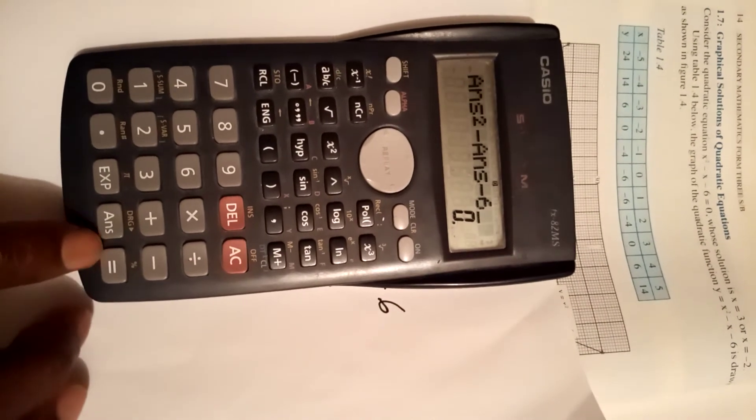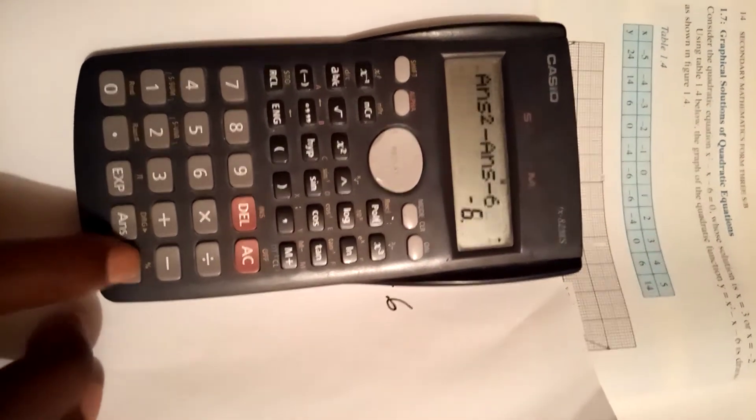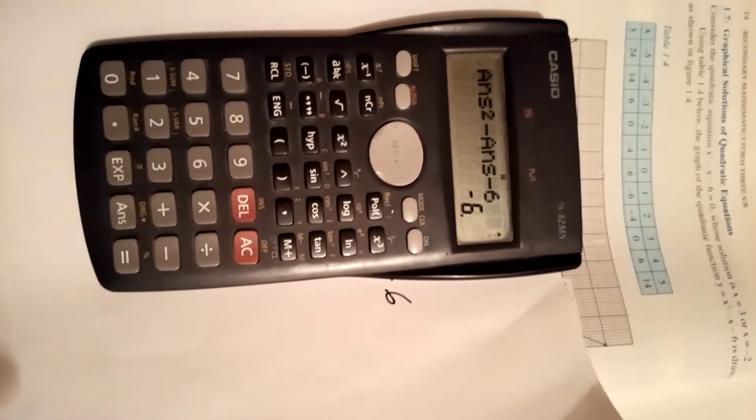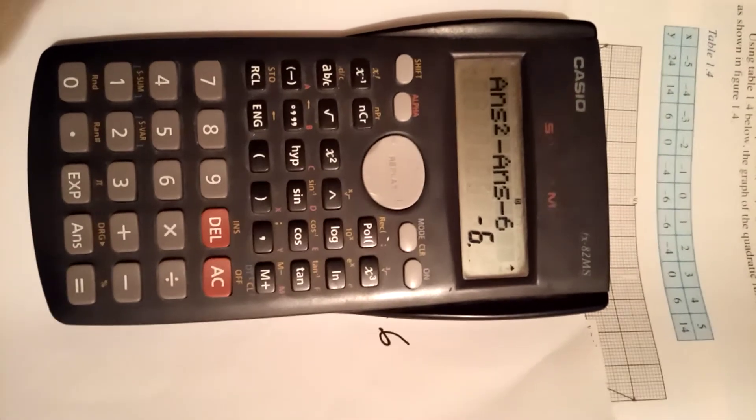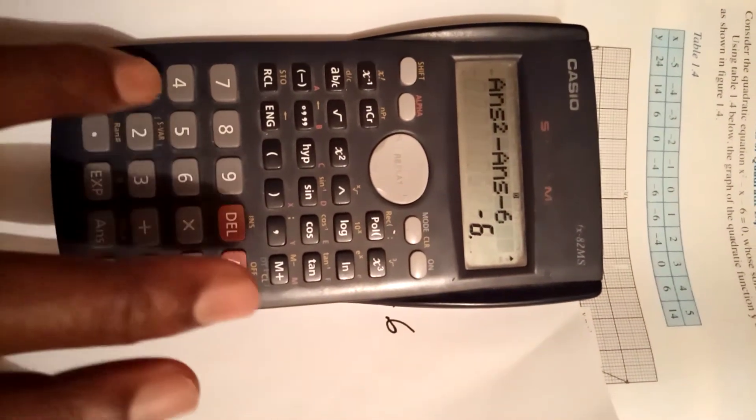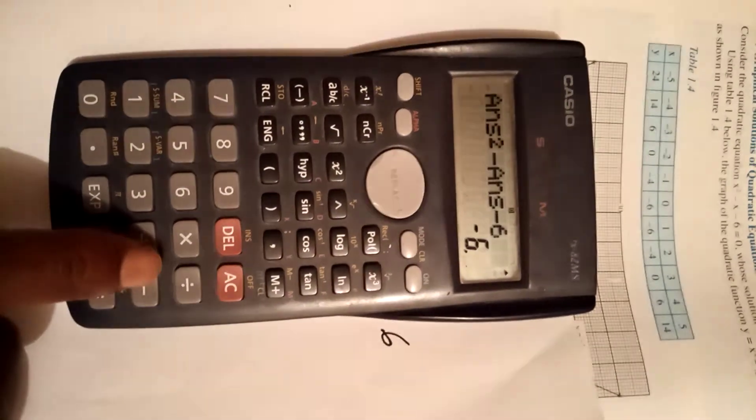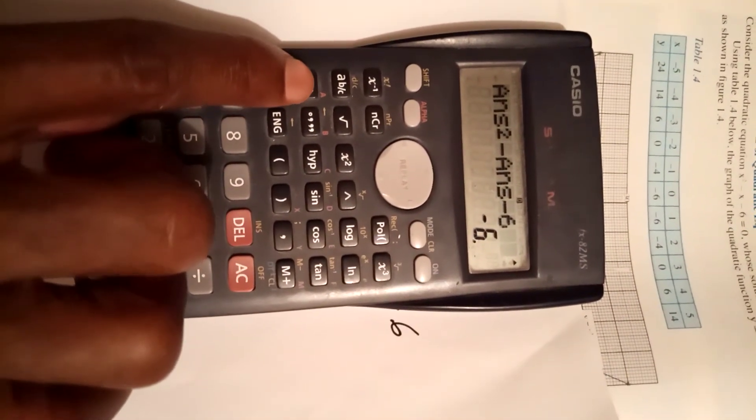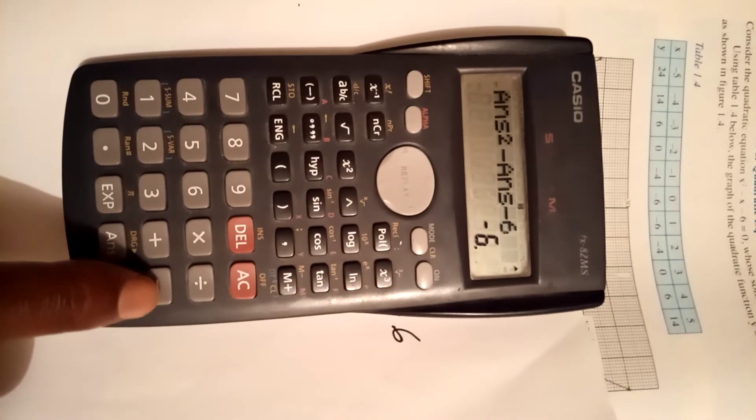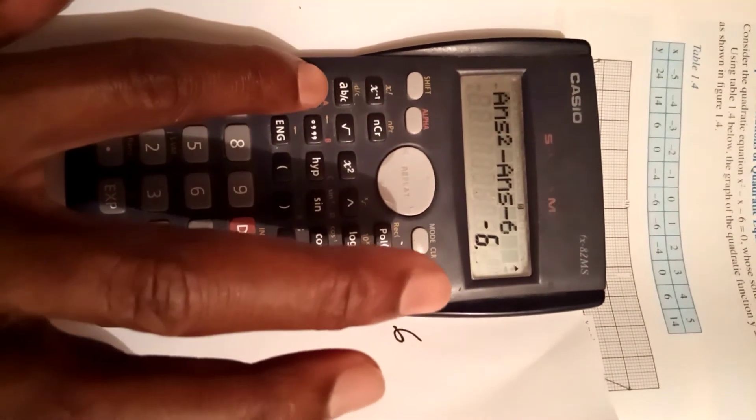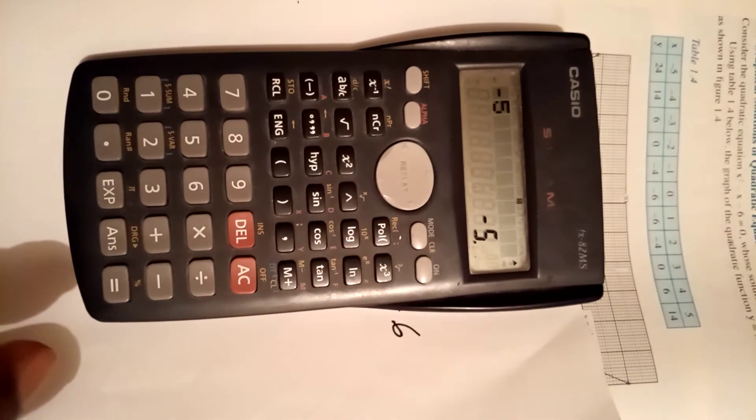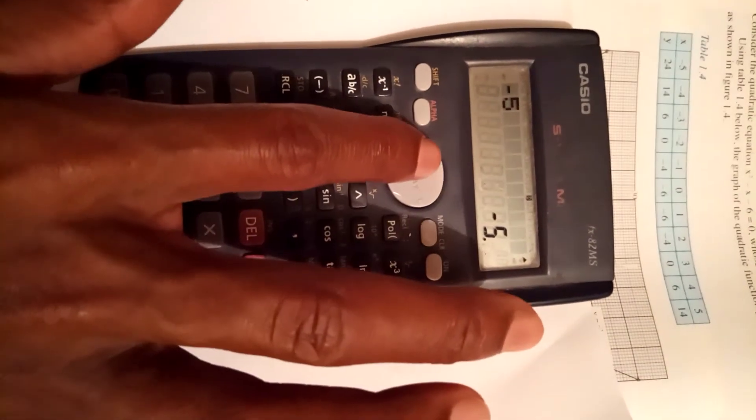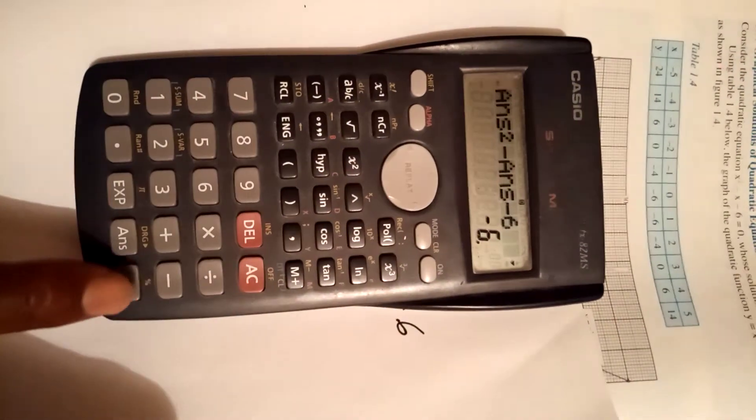Then you press equals. Don't worry about what is displayed as the answer now. You will key in your first value of x which is -5. Remember -5, use the negative function, not the subtraction. I'll press negative 5, equals, and then you can replay to see what was the function, and then if you press equals you have the first value which is 24.